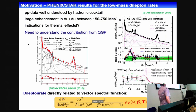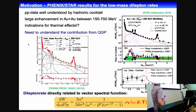Some words about the motivation of these studies. One of the motivations is to understand the low mass enhancement seen in the dilepton rates, for instance at RHIC, at STAR and PHENIX, and to understand what contributions to these dilepton rates could come from the QGP side.